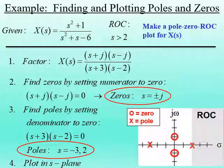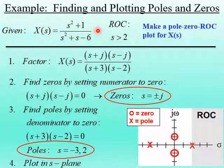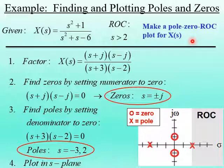Let's look at a different example that shows more features of the pole-zero ROC plot. Suppose we have a Laplace Transform given by s squared plus one, over s squared plus s minus six, and we're told the region of convergence is sigma greater than two. Our goal is to construct the pole-zero ROC plot for this transform.